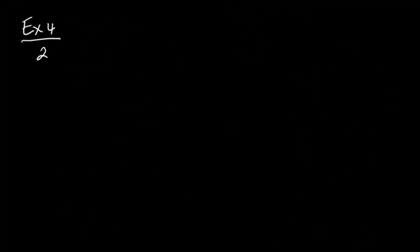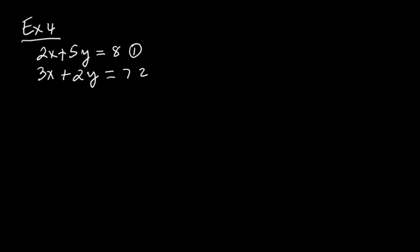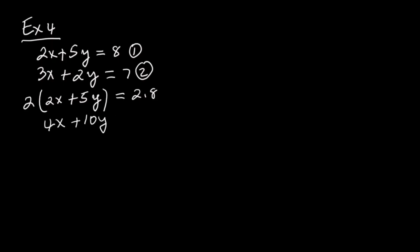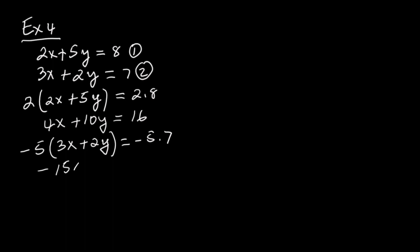Example 4: Solve equation 1, 2x plus 5y equals 8, and equation 2, 3x plus 2y equals 7. We need to eliminate a variable — let's eliminate y. To do that, multiply both equations to get matching y terms. Multiply equation 1 by 2: 2 times 2x plus 5y equals 2 times 8, giving 4x plus 10y equals 16. Multiply equation 2 by negative 5: negative 5 times 3x plus 2y equals negative 5 times 7, giving negative 15x minus 10y equals negative 35.